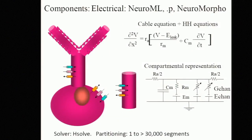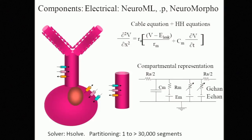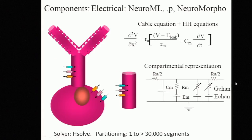To remind you of the kinds of calculations: you can use standard electrical ingredients — cell morphology, a bunch of ion channels. You can define these using NeuroML, using legacy formats like the Genesis .p format, or define morphology using the SWC format from Neuromorpho. It builds up your standard cable equation representation implemented as a bunch of compartments, solved using a numerical engine we call H-solve, in honor of Mike Hines. This can do partitioning over a very wide range of levels of detail.